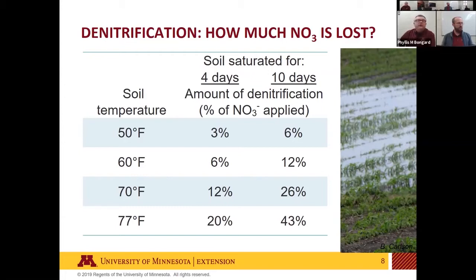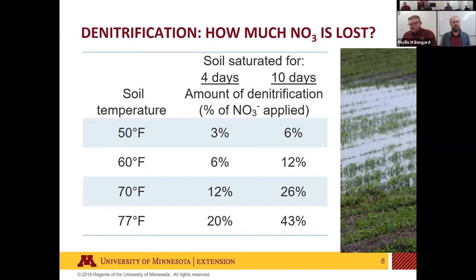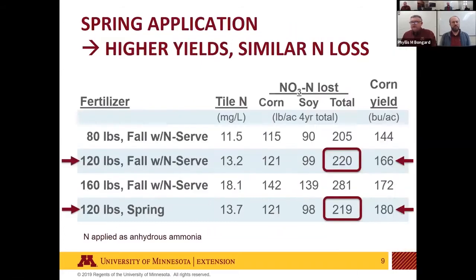If you applied nitrogen last fall, as long as it was cool, it's not likely it converted to nitrate, so it's not subject to leaching or denitrification. If we're saturated early in spring we'll lose some nitrogen to denitrification, but probably not large amounts. The large losses happen when it gets really wet later in the growing season — in May and June — so it's maybe not as big a concern early in the season.